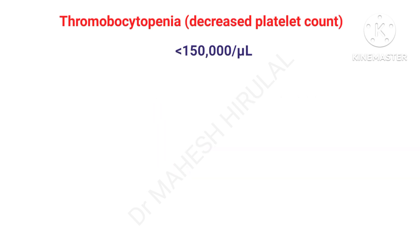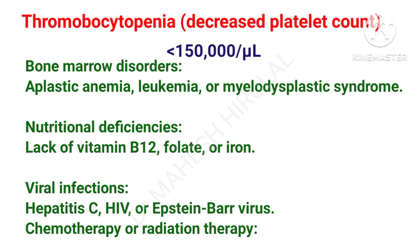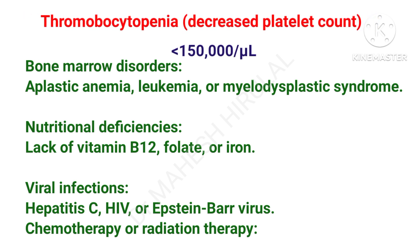Decreased platelet count is called thrombocytopenia. Decreased production of platelets in the bone marrow can lead to thrombocytopenia. Bone marrow disorders like aplastic anemia and leukemia can cause thrombocytopenia. Nutritional deficiencies, viral infection, chemotherapy, and radiation therapy can also lead to thrombocytopenia.